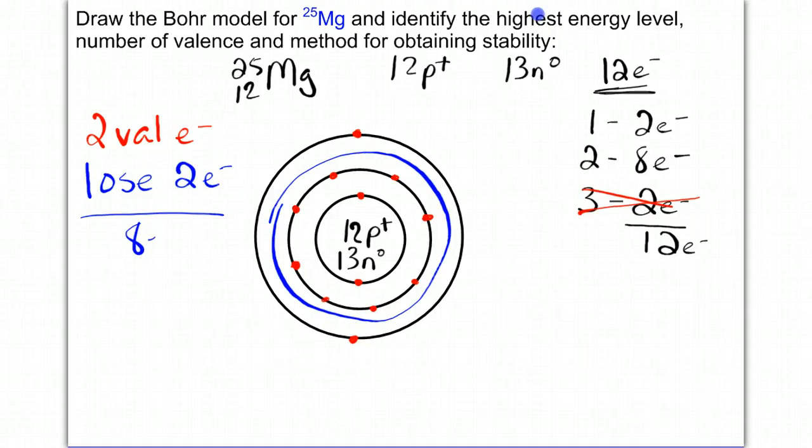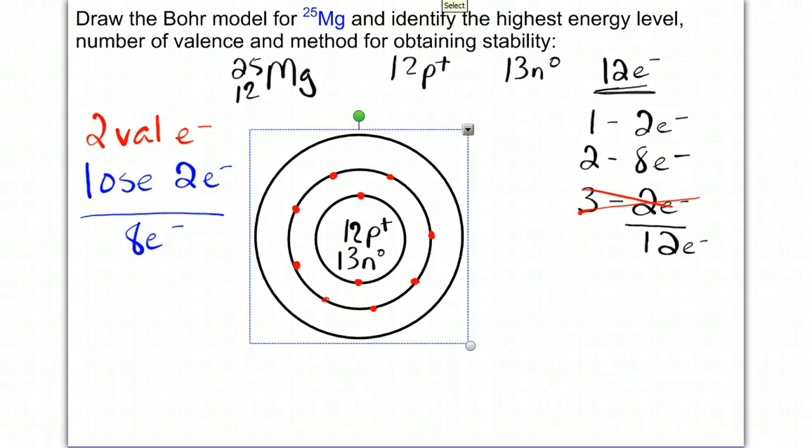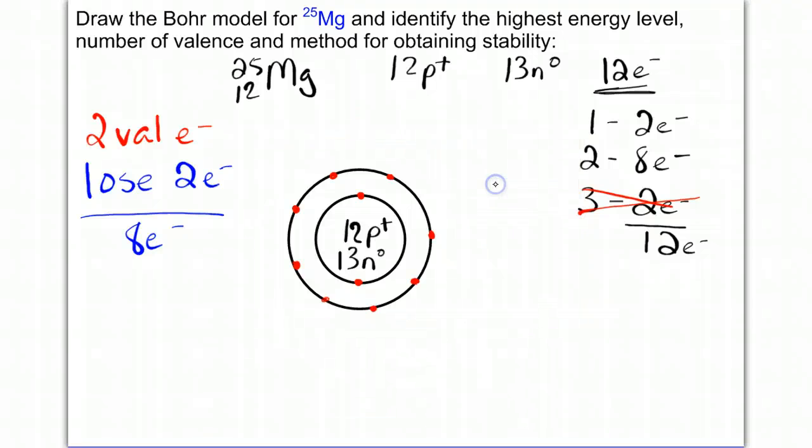So I'm going to erase that third energy level. I have to redraw my little electron there. I'm going to put my electrons back. 1, 2, 3, 4, 5, 6, 7, 8. There we go. Now we have our 8 valence electrons, and realize that this officially gives this a charge of plus 2 because we lost 2 of the electrons. And that completes magnesium. Let's try one more.